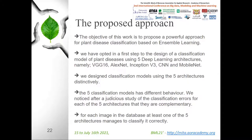The proposed approach. The objective of this work is to propose a powerful approach for plant disease classification based on ensemble learning. In the first step, we designed a classification model of plant diseases using five deep learning architectures, namely VGG16, AlexNet, Inception V3, CNN, and MobileNet. When we designed classification models using the five architectures distinctively, each of the five classification models had different behavior. We noticed, after studying the classification errors for each of the five architectures, that for each image in the database, at least one of the five architectures managed to classify it correctly.